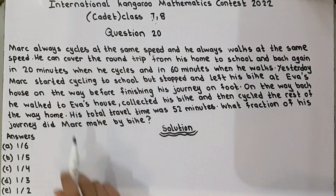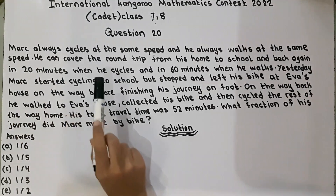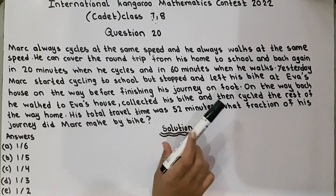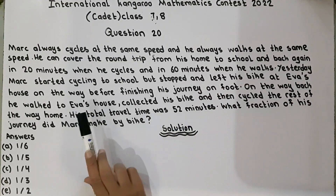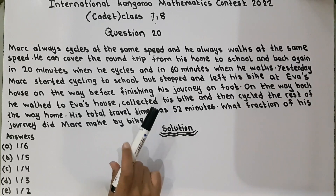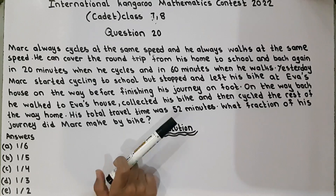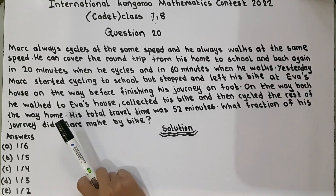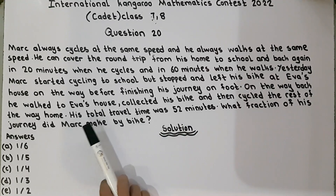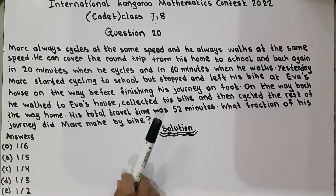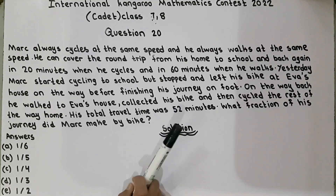Question number 20. Mark always cycles at the same speed and he always walks at the same speed. He can cover the round trip from his home to school and back again in 20 minutes when he cycles and in 60 minutes when he walks. Yesterday, Mark started cycling to school but stopped and left his bike at Ava's house on the way before finishing his journey on foot. On the way back, he walked to Ava's house, collected his bike and then cycled the rest of the way home. His total travel time was 52 minutes.